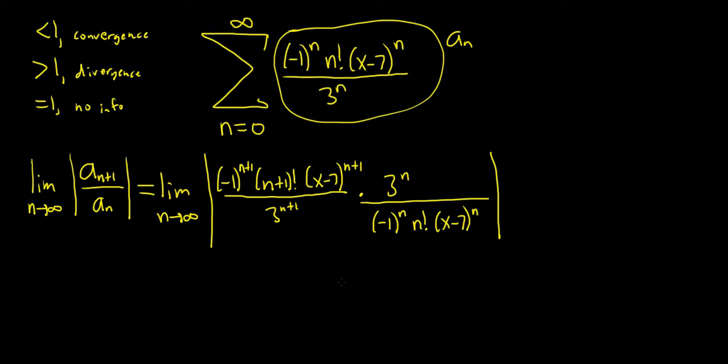So tons of cancellation is going to occur here. So first notice that the negative 1's will go away. Because when you take the absolute value of negative 1 to the n, this piece here is going to be 1 or negative 1. If it's 1, the absolute value of 1 is 1. If it's negative 1, the absolute value of negative 1 is also 1. So no matter what, this is 1. So these go away in these problems.